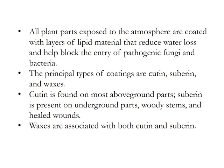All plant parts exposed to the atmosphere are coated with layers of lipid material that reduce water loss and block the entry of pathogenic fungi and bacteria. The principal types of coatings are cutin, suberin, and waxes. Cutin is found on most above-ground parts; suberin is present on underground parts, woody stems, and healed wounds; waxes are associated with both cutin and suberin.